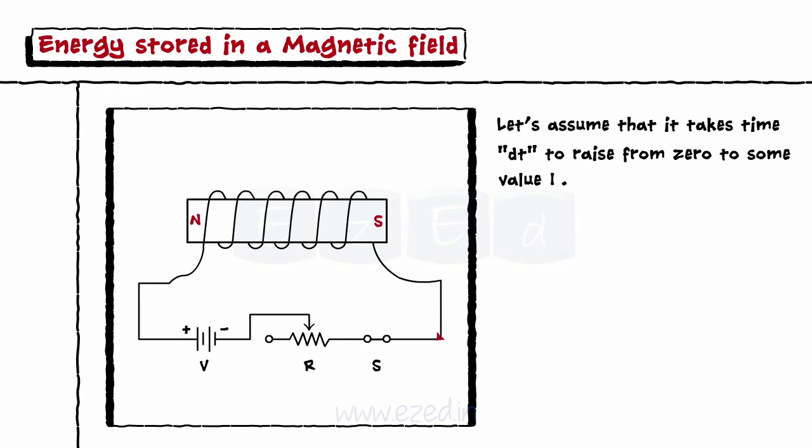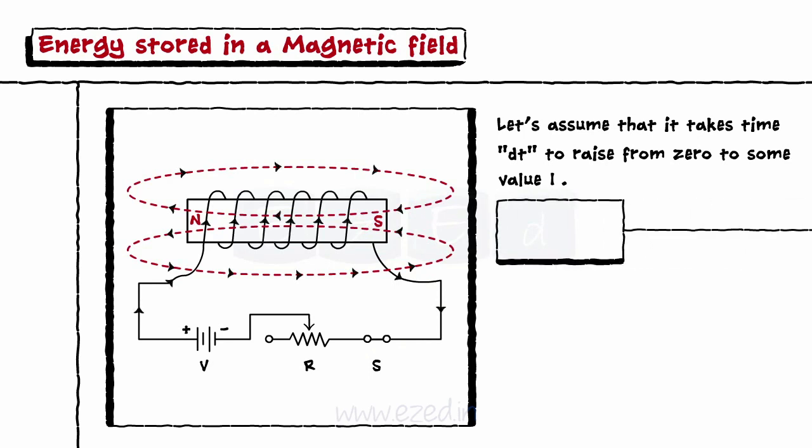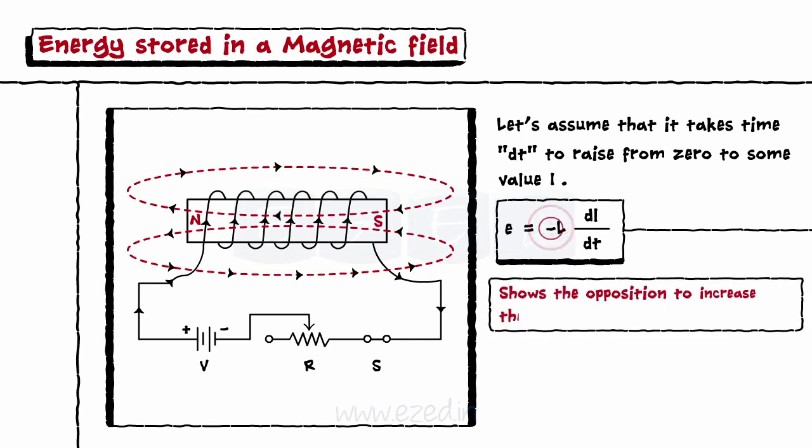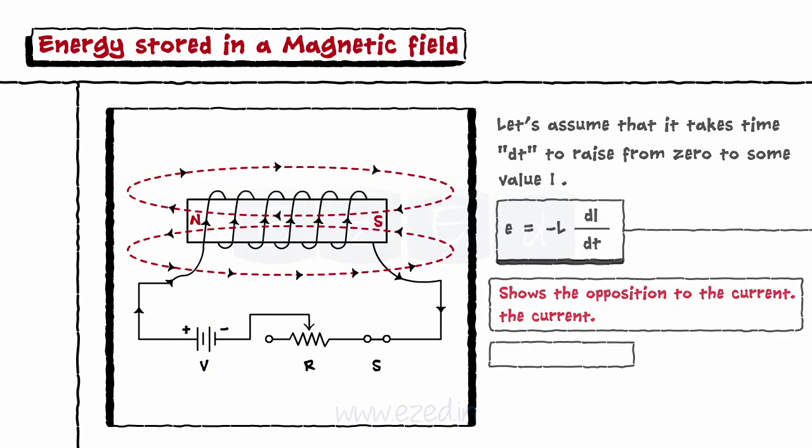As the current changes, the flux linked with the coil also changes and induces the EMF equal to minus L into dI by dt. This minus sign indicates that the EMF induced opposes the increase in the current. To overcome this opposition, the external source supplies the energy. This energy establishes the magnetic field as the current reaches its peak value.